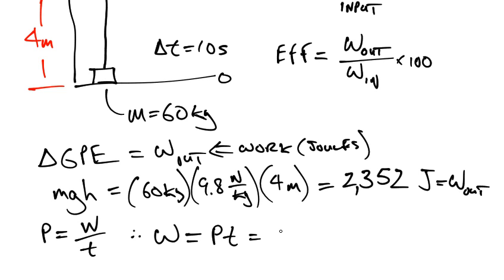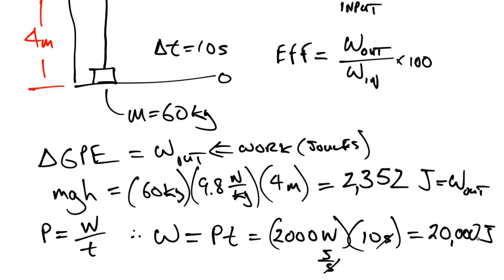Therefore, what's the power input? It's 2,000 watts multiplied by 10 seconds gives me 20,000 joules. Because a watt is another way of expressing that is a joule per second. So seconds cancel out, you're left with joules. So therefore, that is my work in.